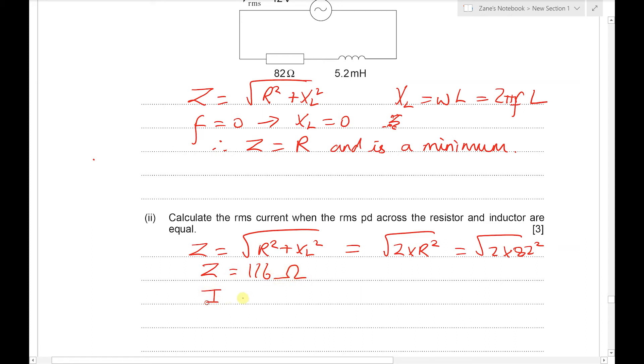Now we can calculate the current in the circuit using V over Z, these are RMS values, so we've got 12 over 116 which will give us 0.103 just to give an extra figure there, that will be in amps.